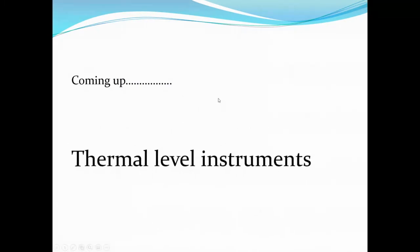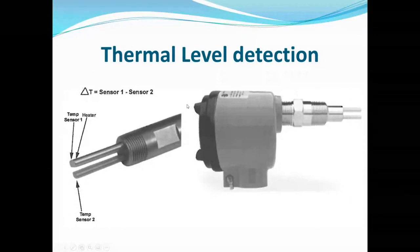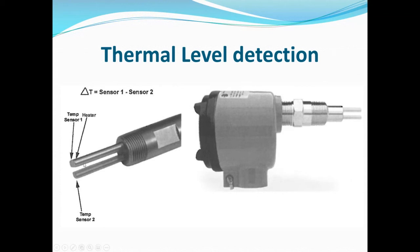Moving on to thermal dispersion — very simple, much more straightforward. The thermal level detector has two probes: one is essentially heated and both have sensors. They either keep the two probes at the same temperature and detect a difference, or vice versa. These are almost exclusively point level devices. The change in temperature is the temperature sensed by the heated probe minus the temperature of the unheated reference probe. When not covered by anything, temperatures differ considerably; when covered by a process medium, temperatures are closer together — that's the science of it.